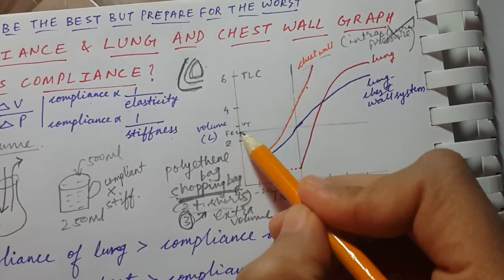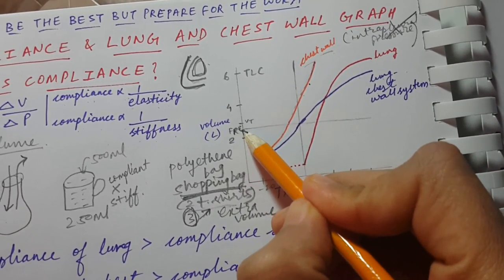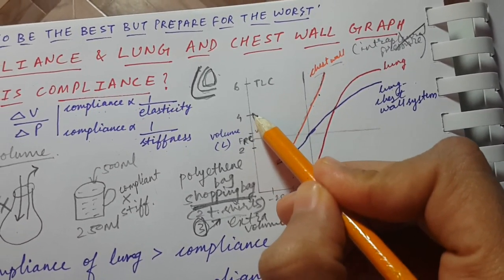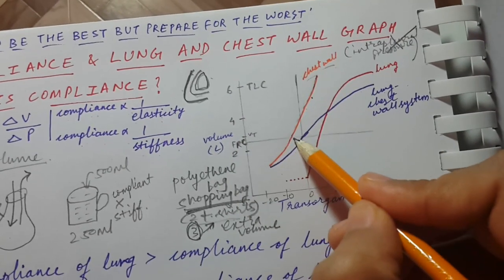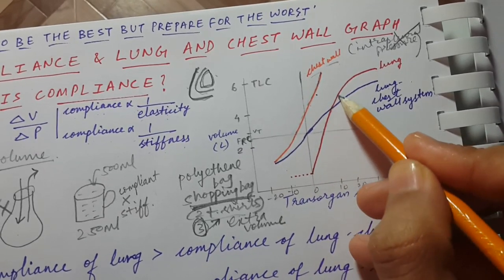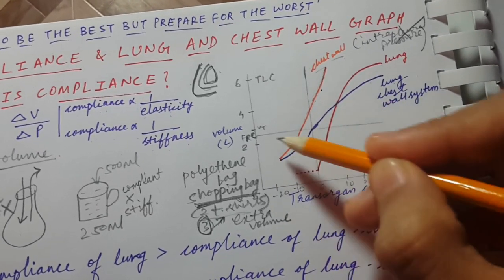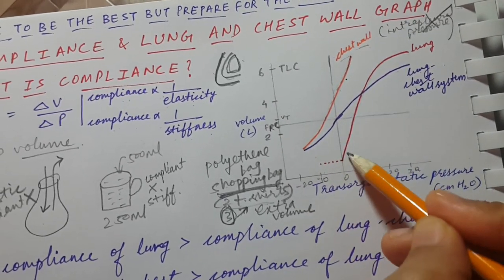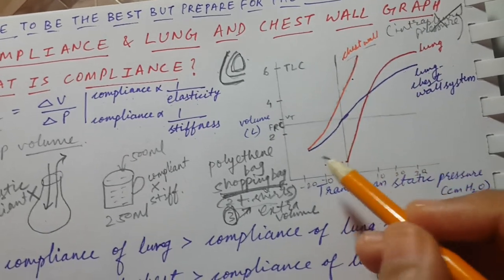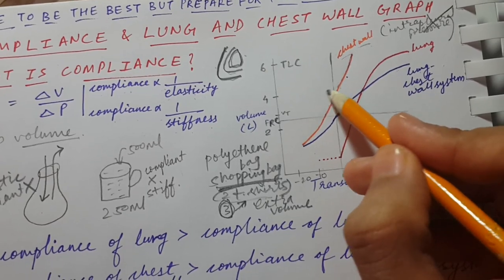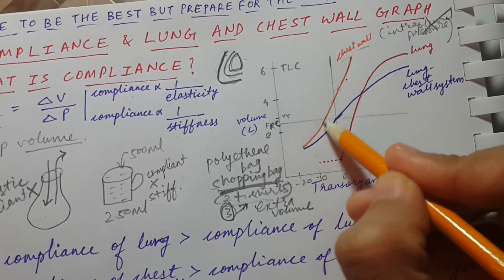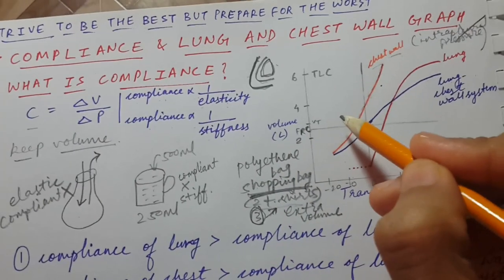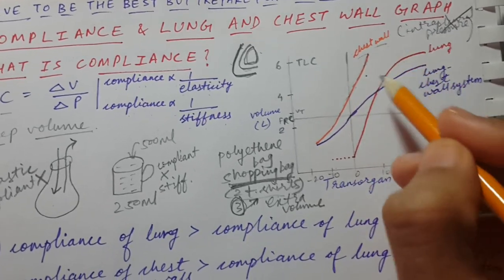At FRC — the end of expiration — you are neither inspiring nor expiring. When you start inspiration, the volume in the lung increases and the pressure also keeps on increasing in both the lung and the combined lung-and-chest-wall system. As you keep inspiring, the pressure moves toward the right side. For most of the part, the pressure in the chest wall remains negative — even during tidal volume — but after a certain limit it starts becoming positive.